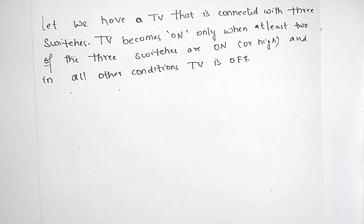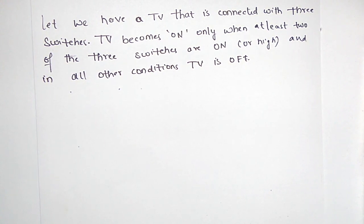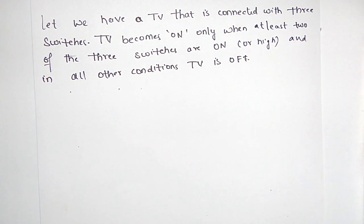Let's say we have a TV that is connected with three switches. The TV becomes on only when at least two of the three switches are on — that is high. In all other conditions, the TV is off. Let us take this example using a truth table. The three switches are represented by three variables A, B, and C, and the output of the TV is represented by F.